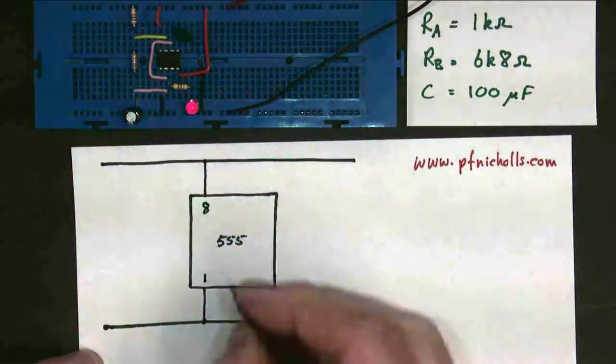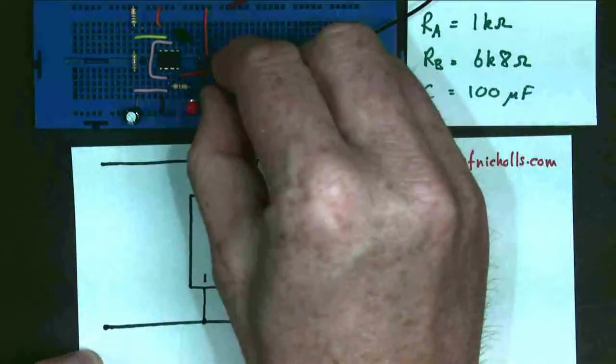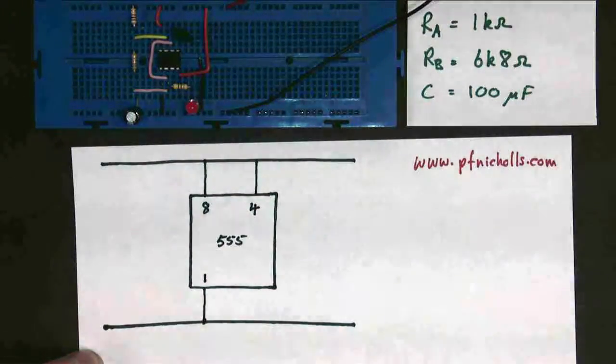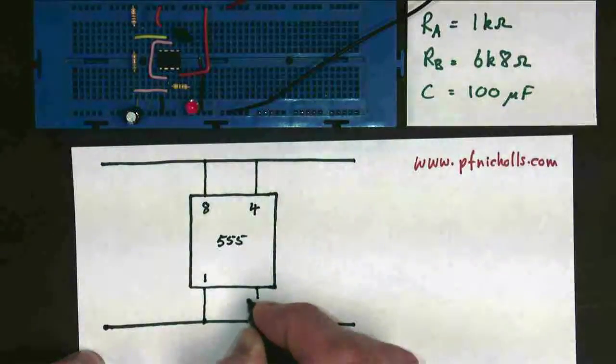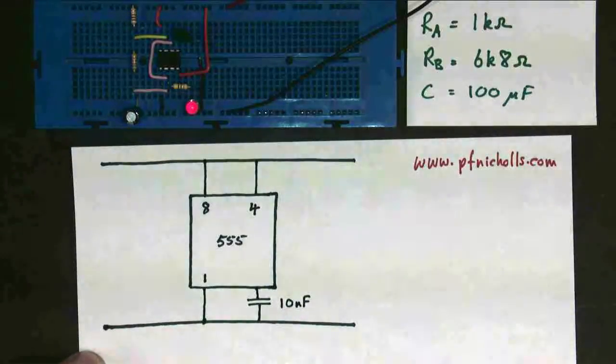We have another connector also going to positive, pin 4. This red wire here, which is called the reset, which I'm going to talk about in a moment. And we have this little capacitor down to ground, and that's nominally 10 nF. You should always quote that value like that. That's our starting point.